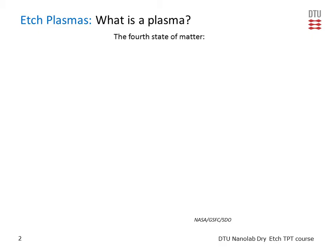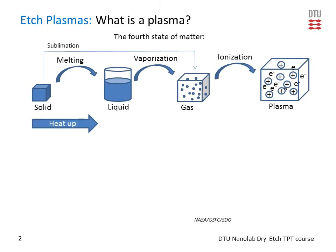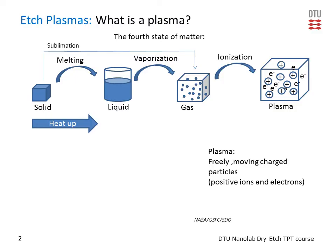The plasma is said to be the fourth state of matter. When you have a solid and you heat it up, in most cases you will get a liquid. If you keep heating, you will get a gas. If you keep heating the gas, it will ionize and you will get a plasma. So the plasma is freely moving charged particles — positive ions and electrons.